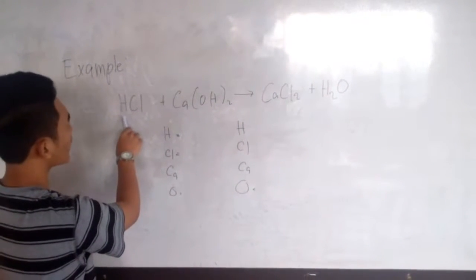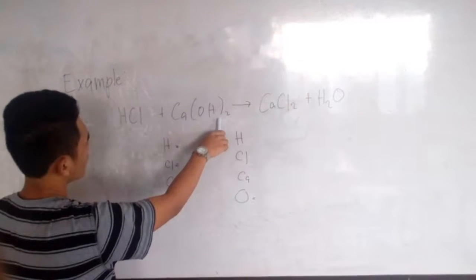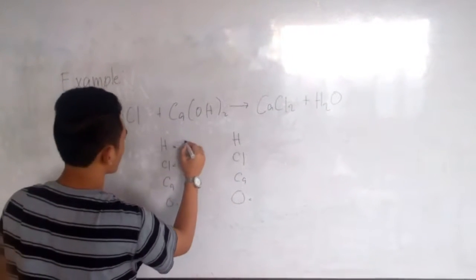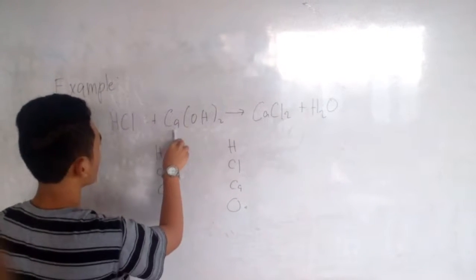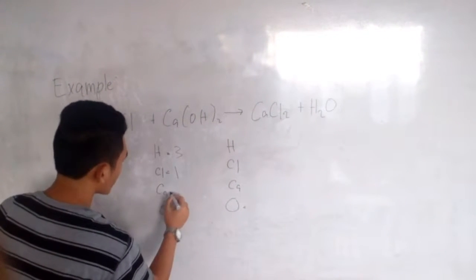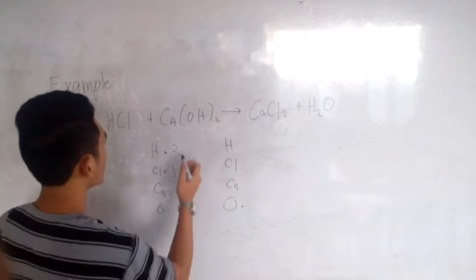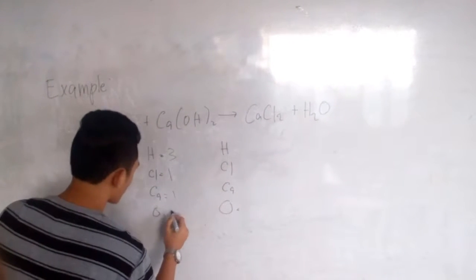This hydrogen here is 1 and the other is 2. Then 2 plus 1 equals 3. Then the chlorine here is 1. You write 1. Then the calcium here is 1 too. You write 1 also. Then the oxygen is 2 because of this. You write 2.